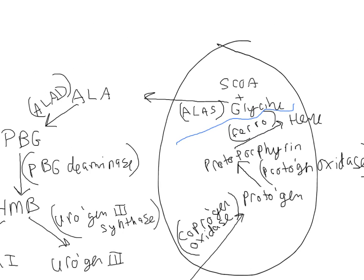Let's take a look at how heme is made biochemically. The first step takes place inside the mitochondria, and then out in the cytoplasm are the intermediate steps, while the first step and the last few steps all take place in the mitochondria. You have succinyl-CoA and glycine, and they — through the process of amino-levulinic acid synthase, or ALAS — this is the committed step and also the rate-limiting step. Through ALAS, succinyl-CoA and glycine are combined to form amino-levulinic acid.